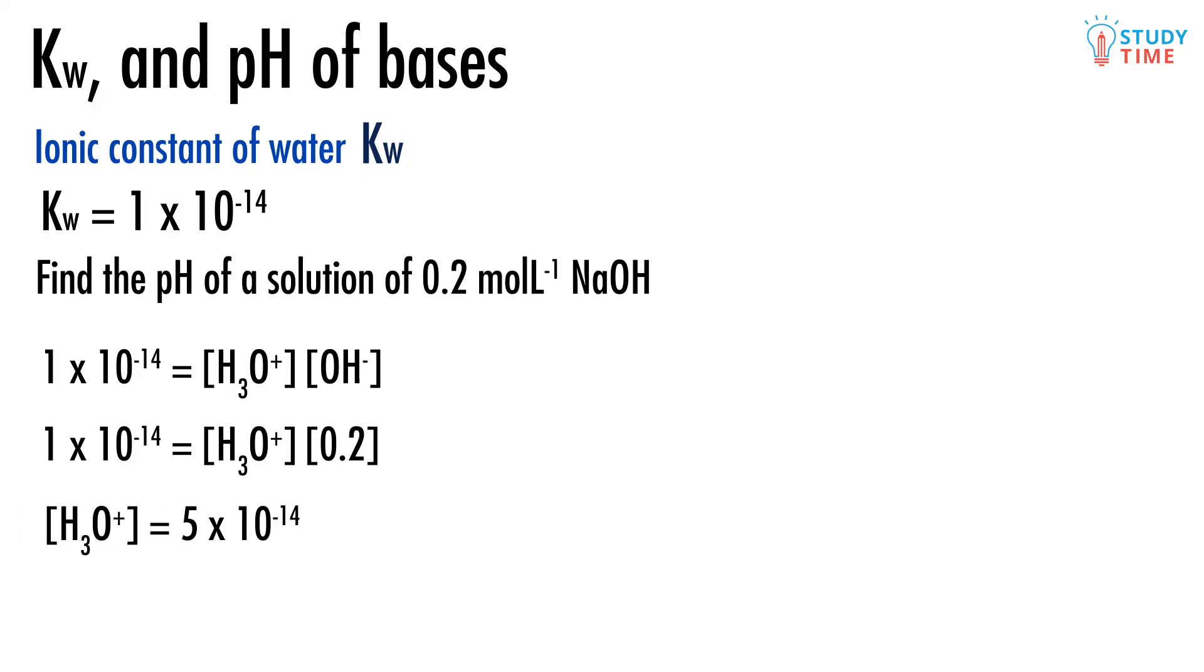A little bit of rearranging reveals that [H3O+] = 5×10^-14. Now that we've got the concentration of hydronium ions, it's simple to find the pH. pH = -log[H3O+] = 13.3. And once again, this makes some rough sense. A strong base like sodium hydroxide will always have a reasonably high pH. If you recall that the higher end of the pH scale is 14 or 15, then a figure of 13.3 sounds about right.